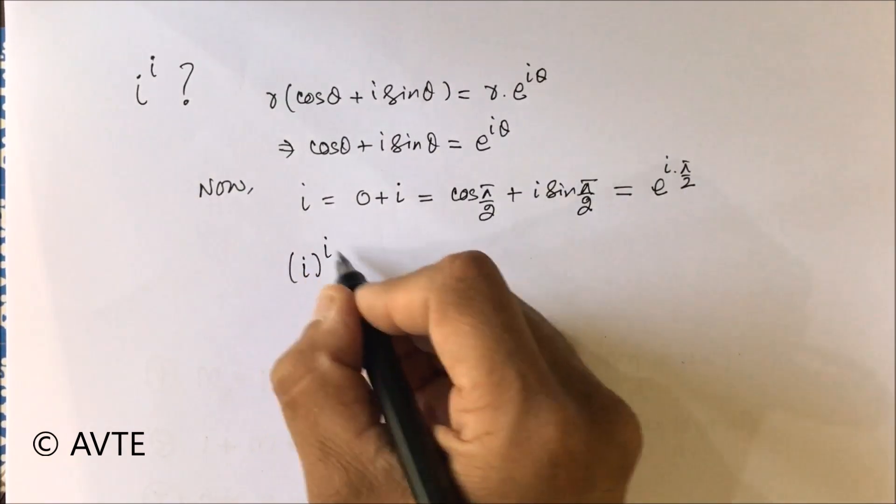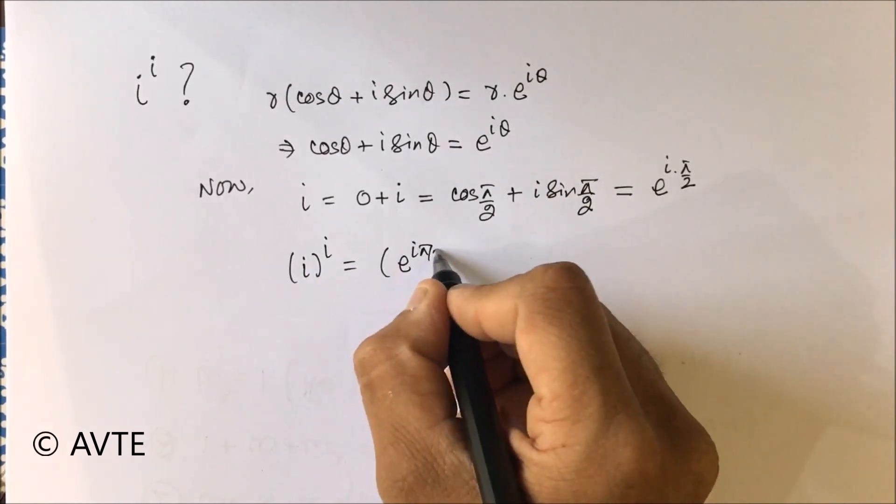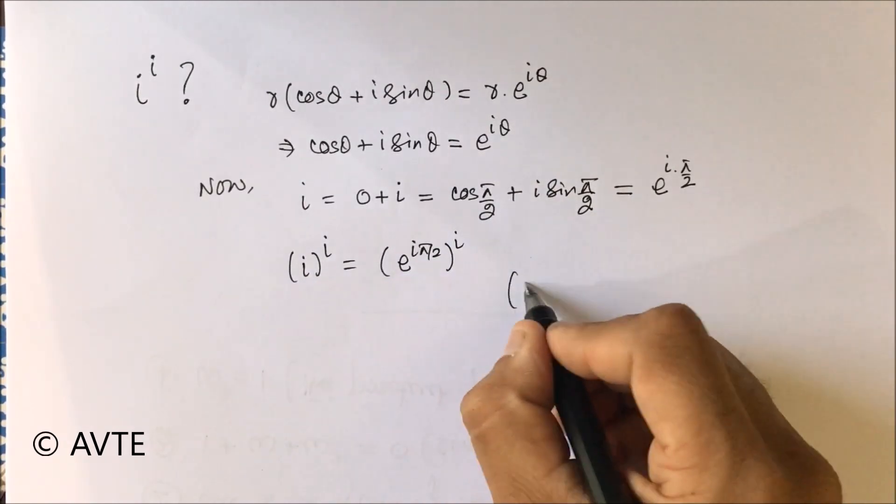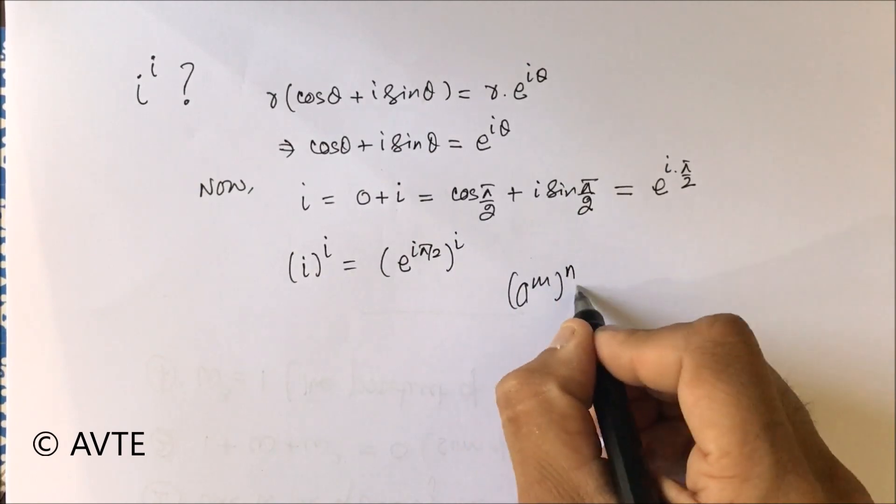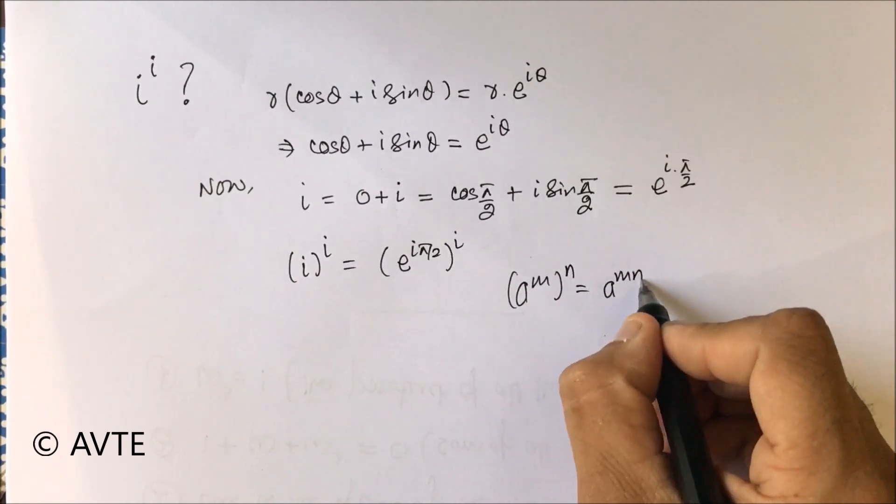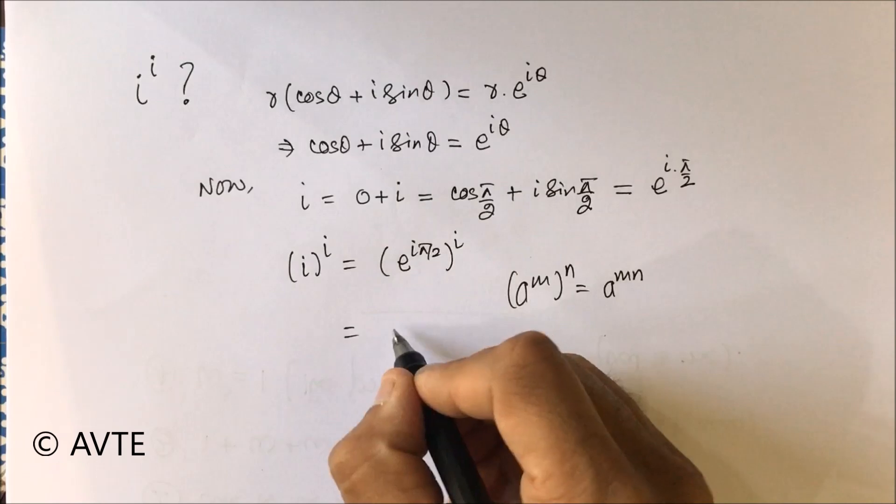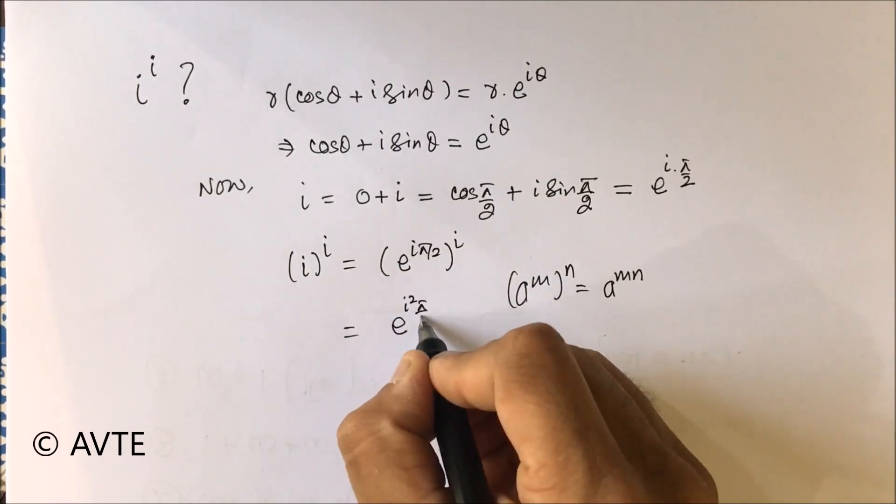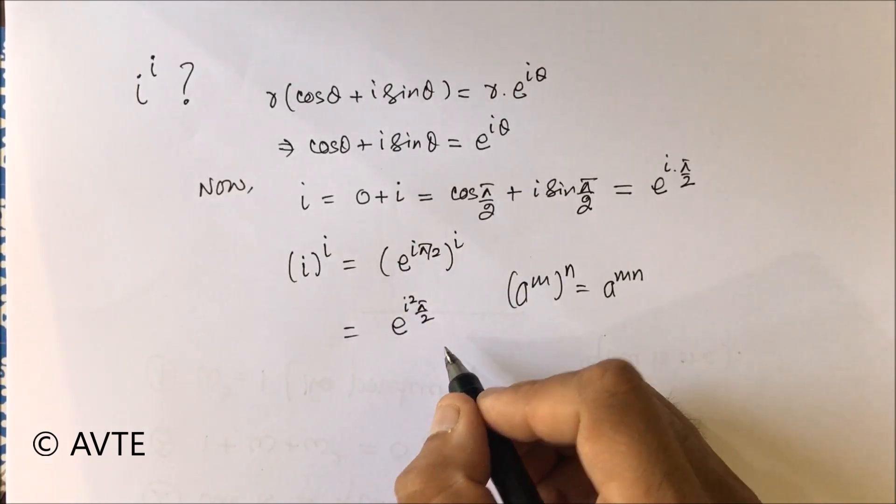Now we come to iota to the power iota. What is the basic rule? We can multiply the powers, so using that rule it turns to e raised to power iota squared times pi by 2.